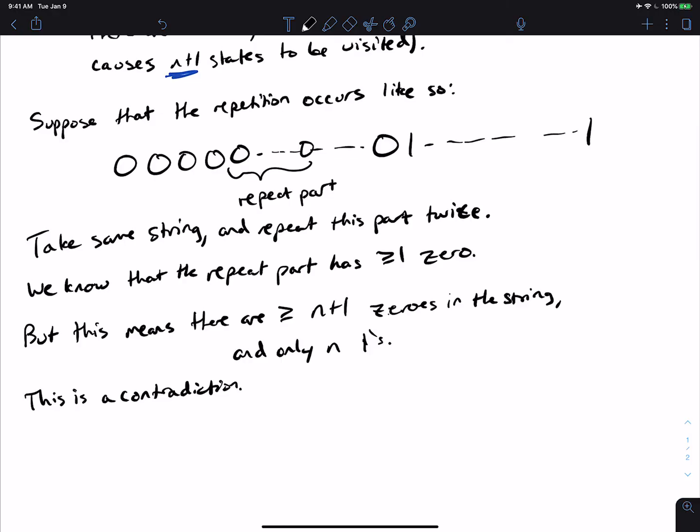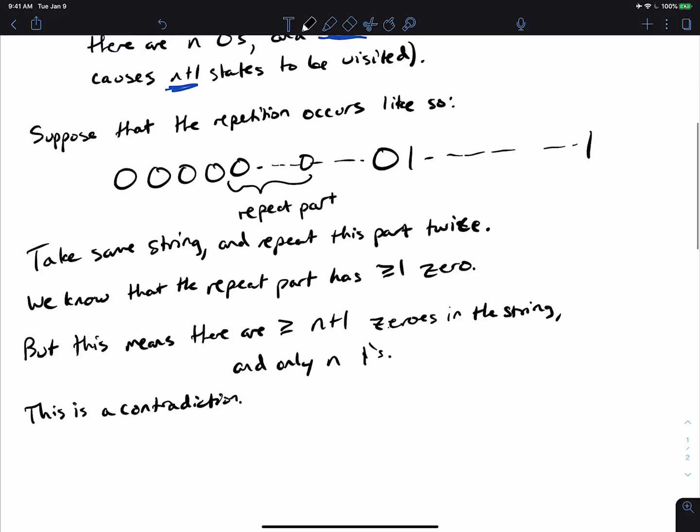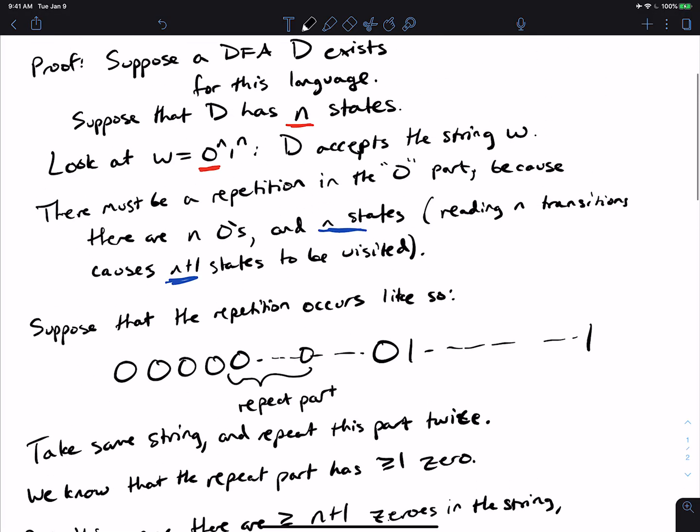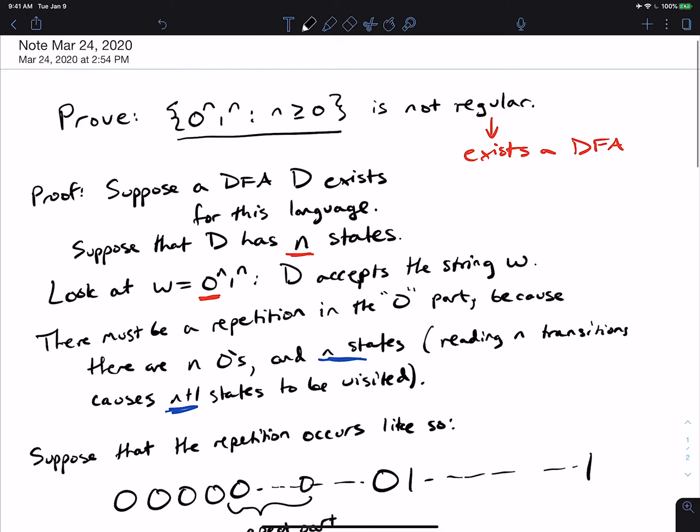Because by doing the repeat part twice, we still end up in the same state at the very end, which we will assume is a final state because we chose the string originally to end up in a final state because it's in the language.